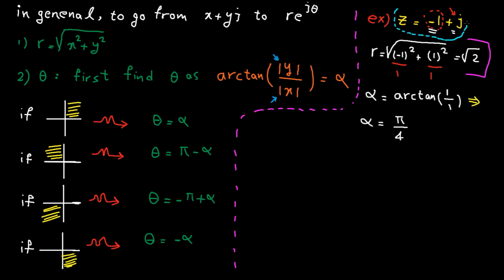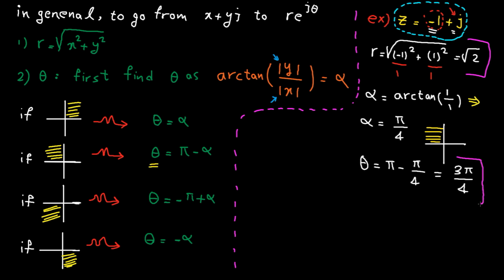Now, this complex number is in the second quadrant as the real part is negative and the imaginary part is positive. So the final angle is pi minus alpha, which is 3 pi divided by 4.